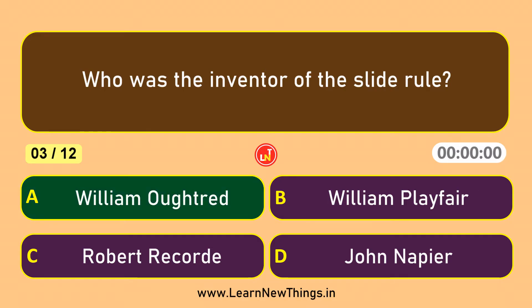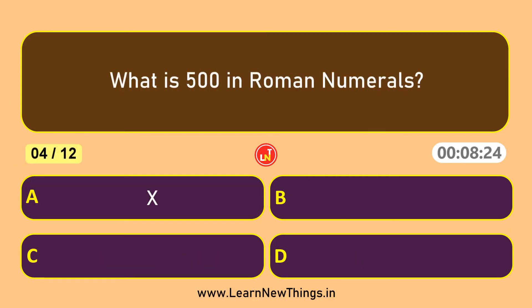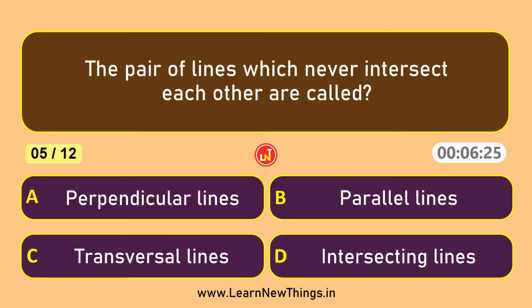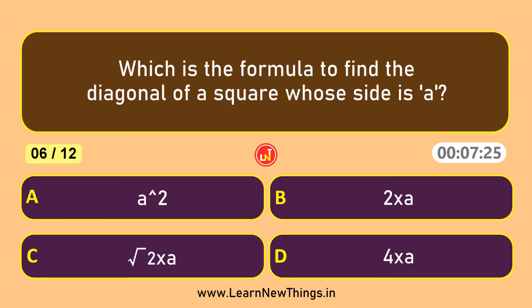William Oughtred. What is 500 in Roman numerals? D. The pair of lines which never intersect each other are called parallel lines.